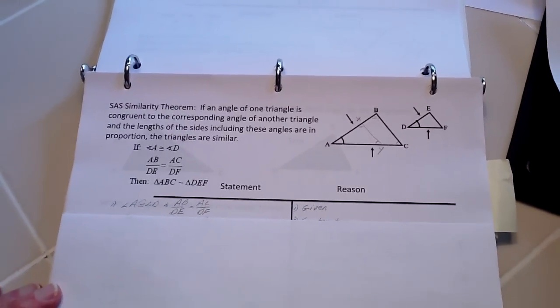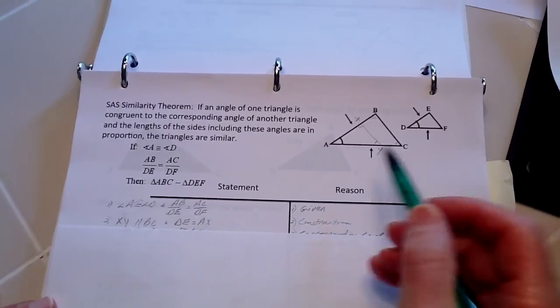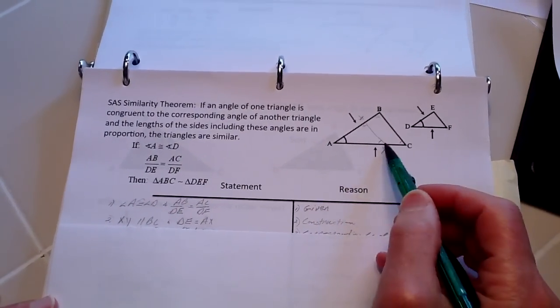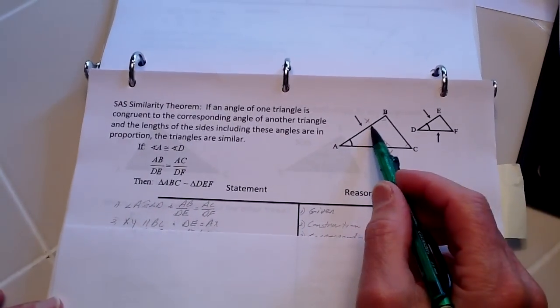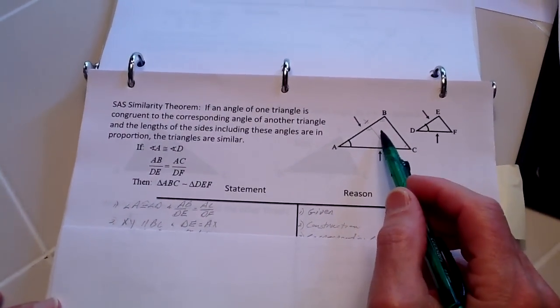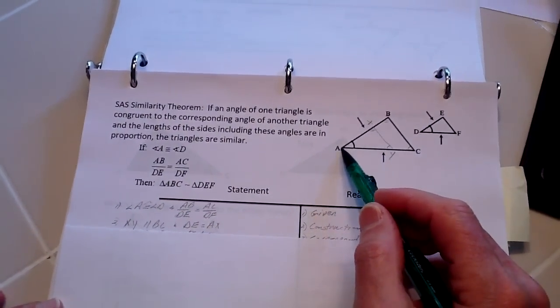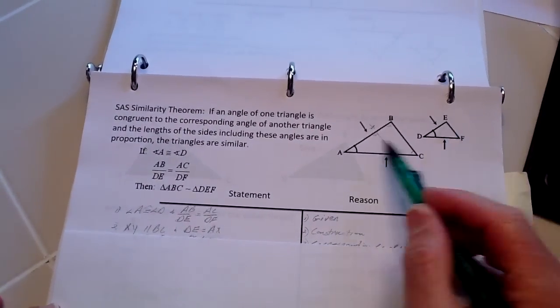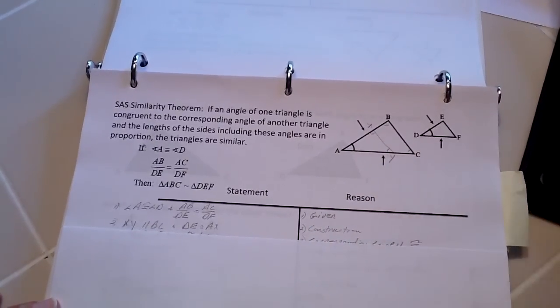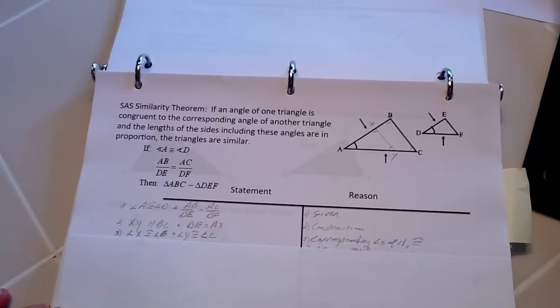Again, restatement of the given. I'm going to construct a line XY here which is going to be parallel to BC, and it's also going to be the same length, so that AX is to DE. That's done by construction.